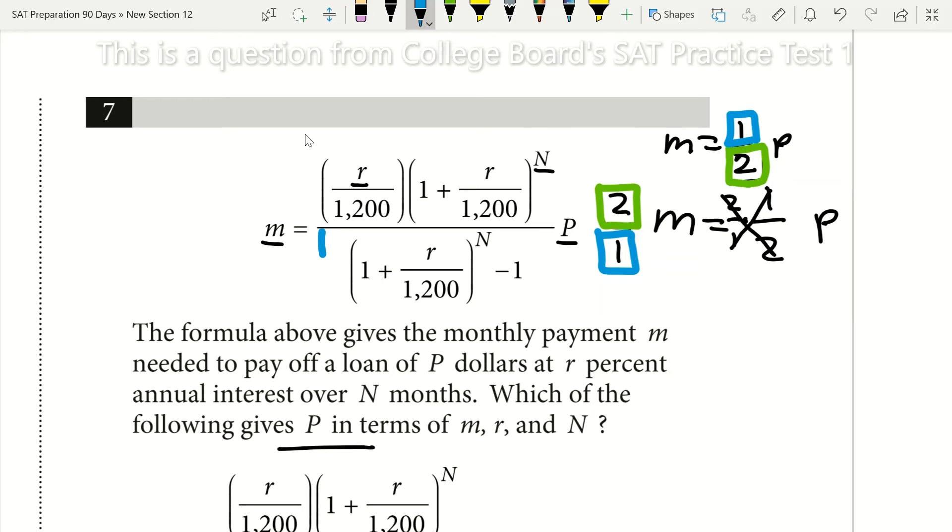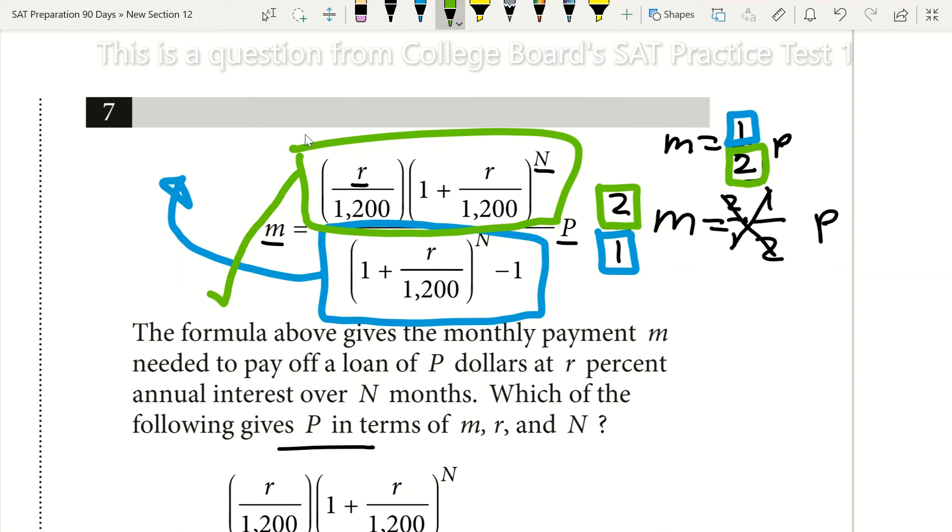So that's all we're going to do here as well. We'll take our denominator right here next to p and put it up here in the numerator next to m. Next, we'll take what was in our numerator next to p and put it in our denominator next to m.